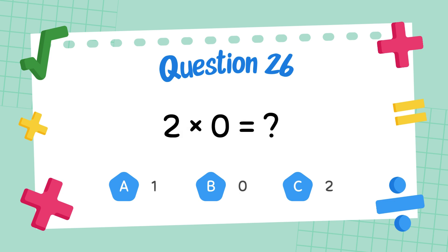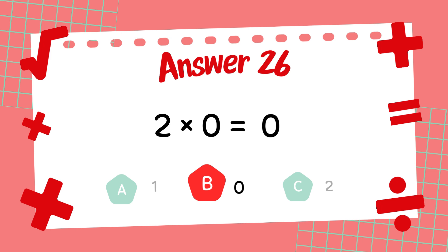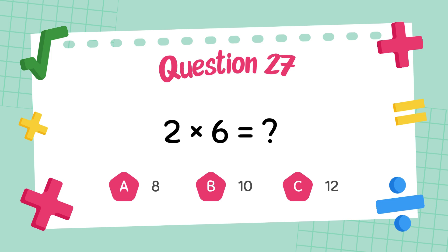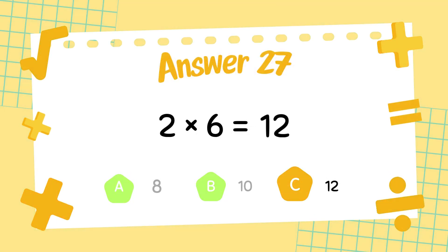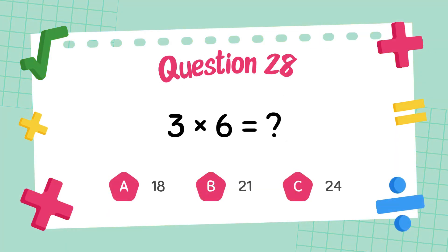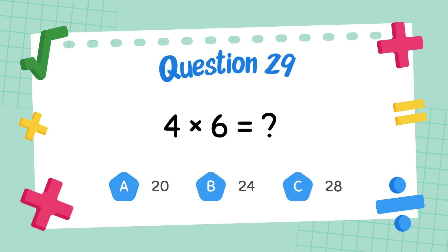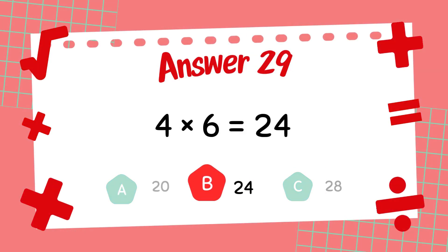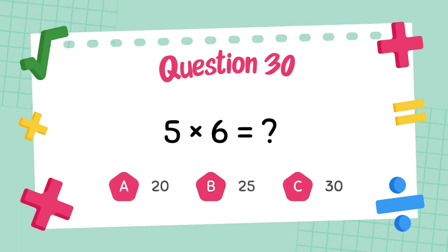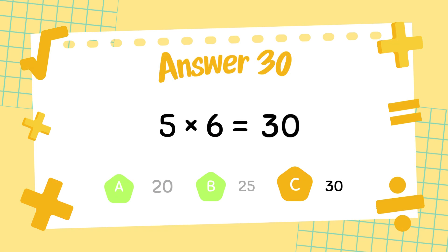What is 2 times 0? The answer is 0. What is 2 times 6? The answer is 12. What is 3 times 6? The answer is 18. What is 4 times 6? The answer is 24. What is 5 times 6? The answer is 30.